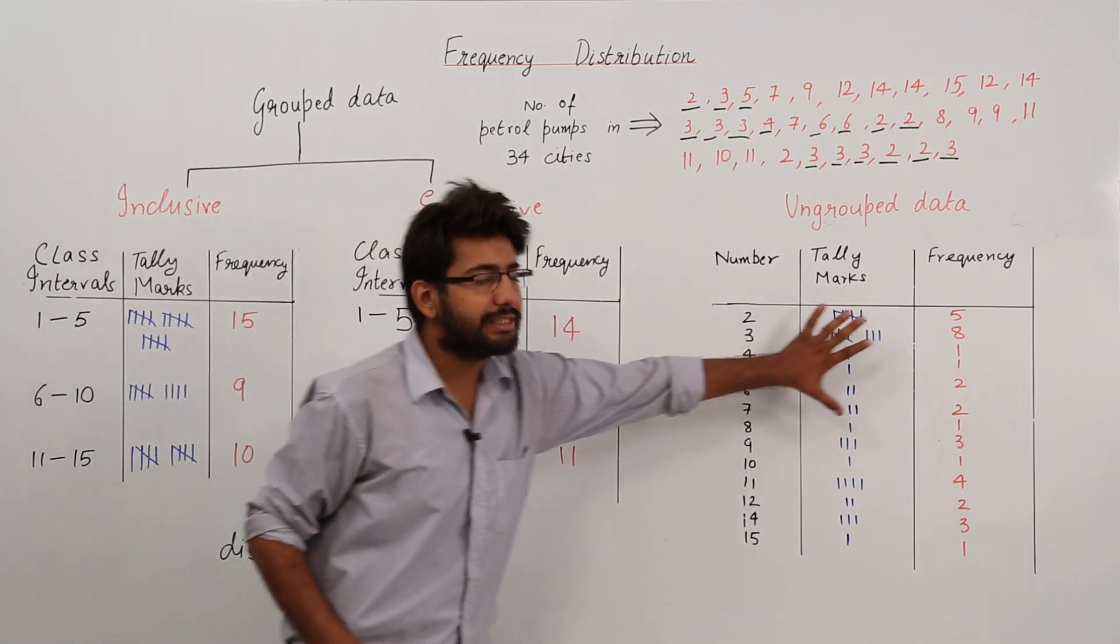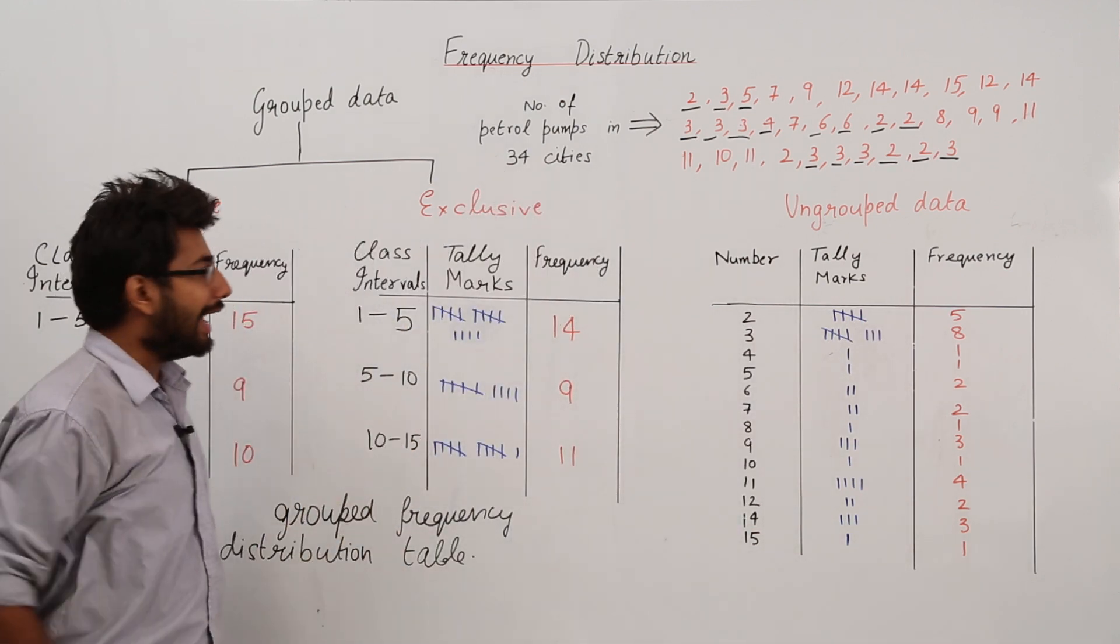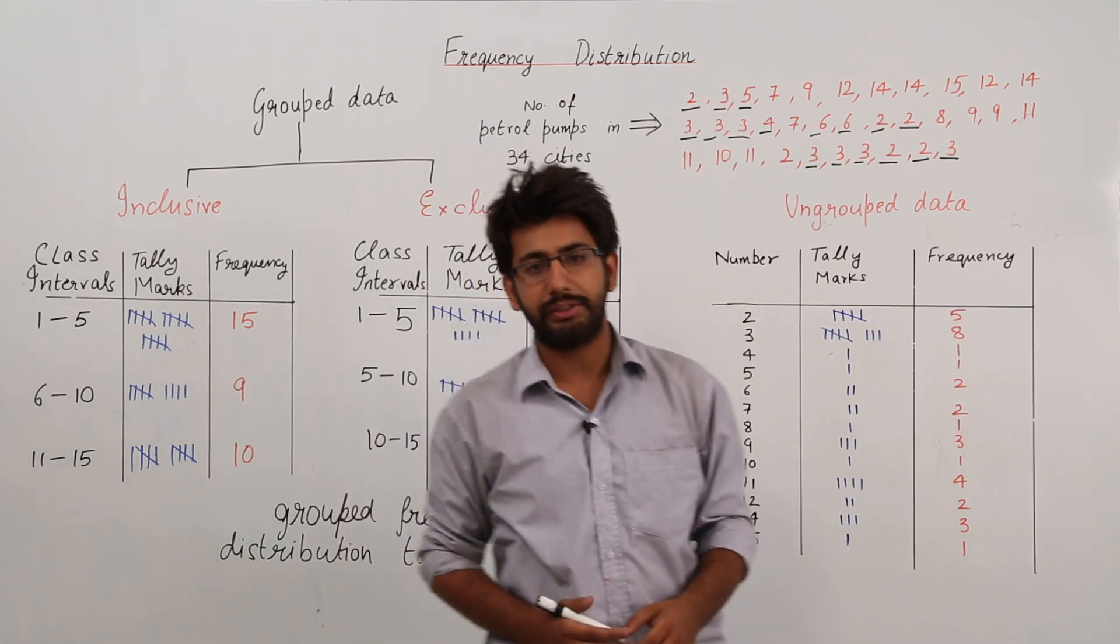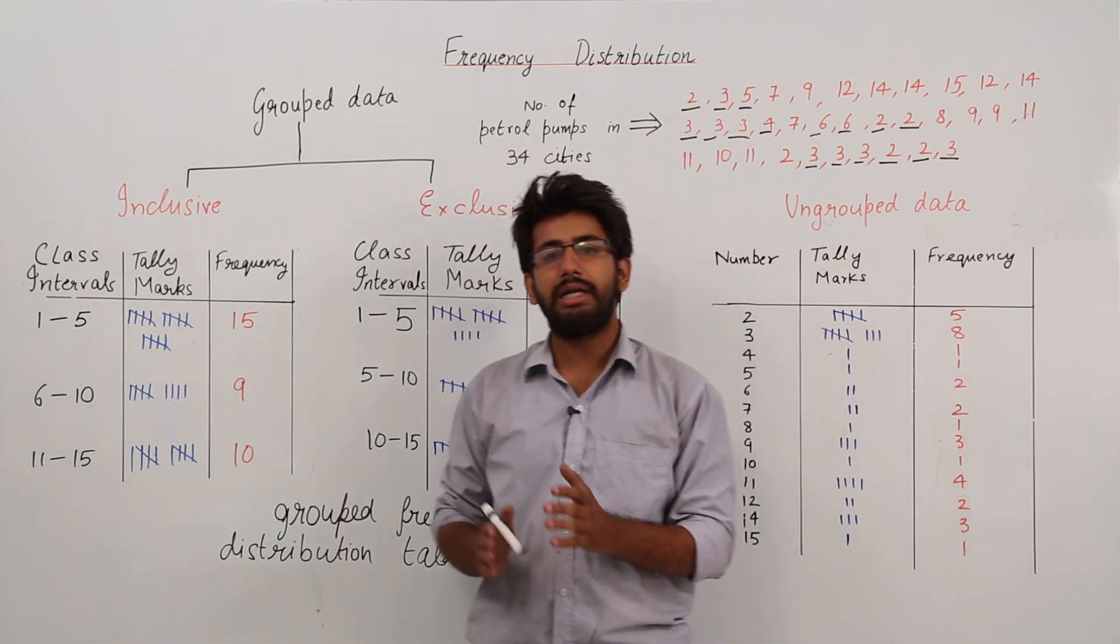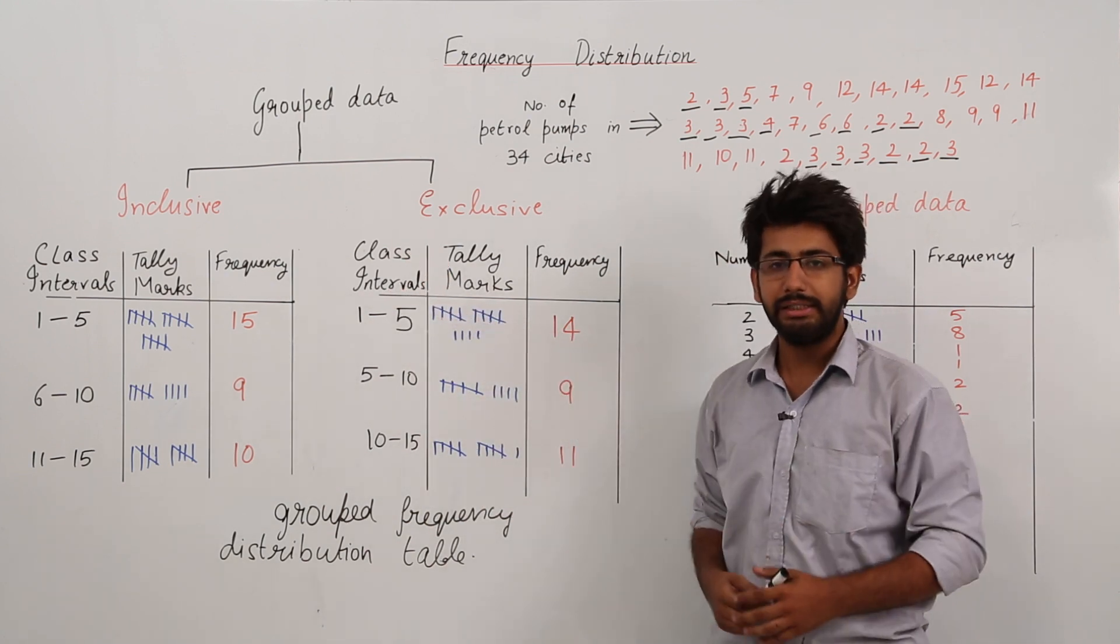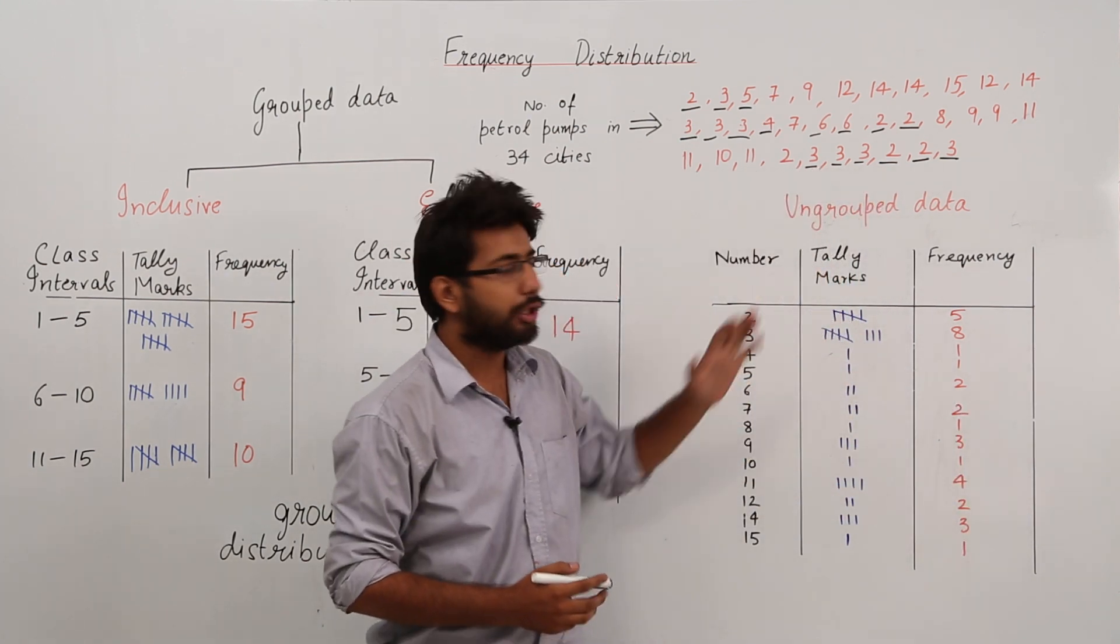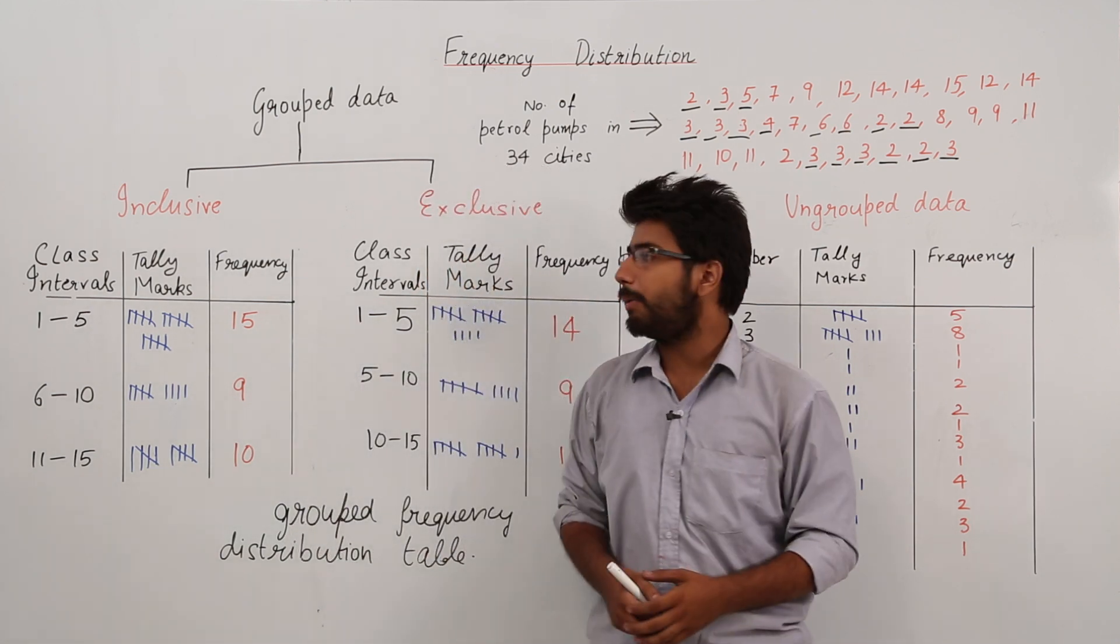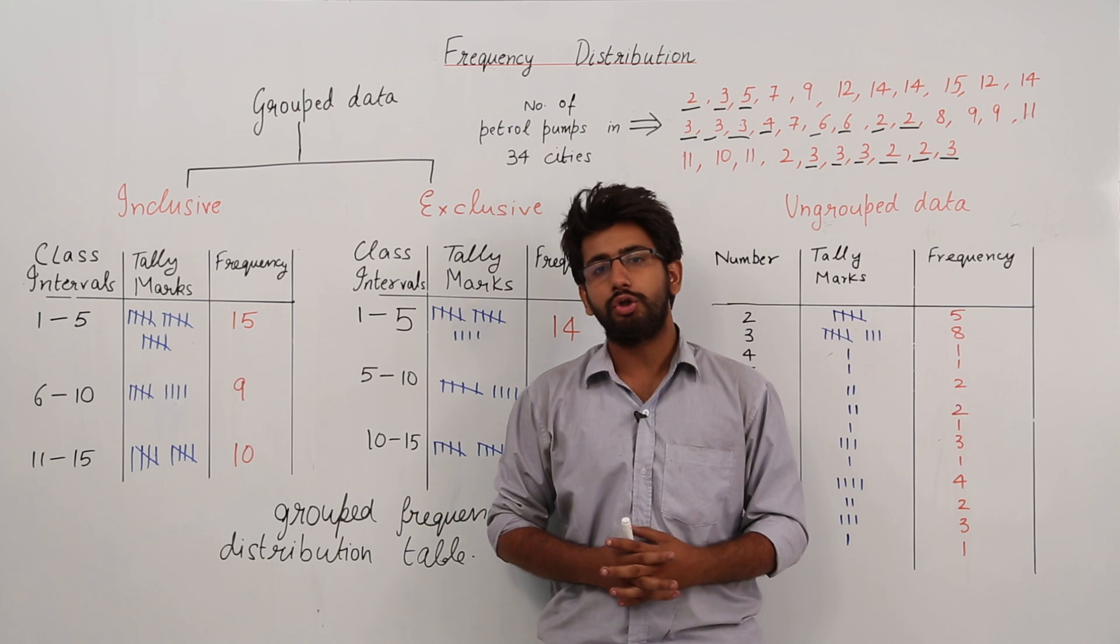Now if you compare these two tables, this is a more condensed form and this is a more expanded form. That means whenever our data is large, this method of grouping of the data is preferred over the ungrouping of the data. Now we'll discuss in detail about the terms which are related to the grouping of the data.